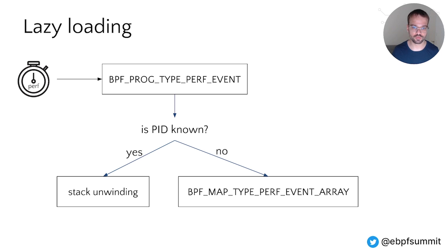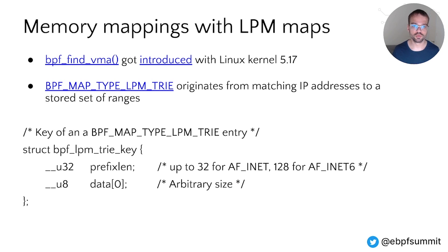At the next iteration, the eBPF programs can unwind the process's stack. This technique allows a simple workflow as it does not require eBPF programs to be attached and managed on multiple other process-related events in the Linux kernel, like fork. On newer Linux kernels, eBPF helpers like bpf_find_vma are available to fetch the backing memory mapping for a process without requiring the user space component to resolve it, but this helper is only available for Linux kernels newer than 5.17.